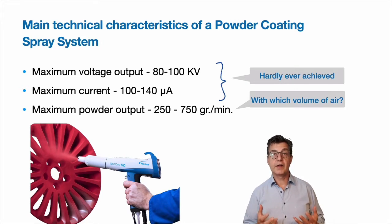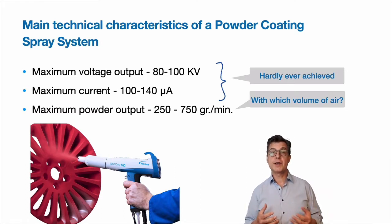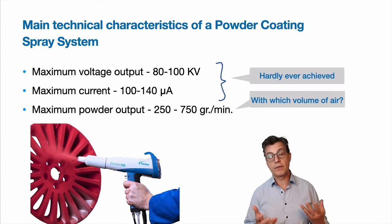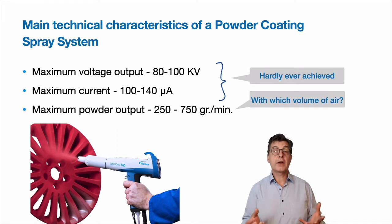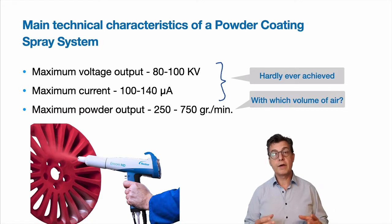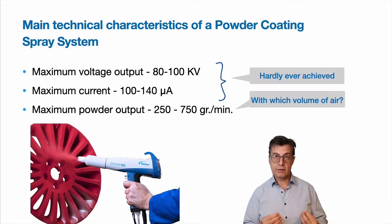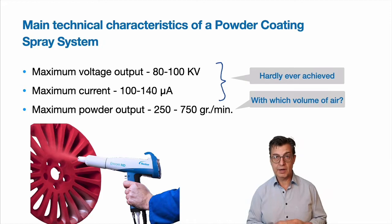The volume of air defines the spray pattern velocity, which in turn has the most profound effect on the application efficiency and on the ease of coating of complex product geometries and what is called Faraday cage areas. The Faraday cage is historically thought to be strictly an electrostatic phenomenon, but in fact it is very much an aerodynamic phenomenon. When we don't control air turbulence inside a recessed area, this is when we start experiencing difficulties applying powder coating in the corners.